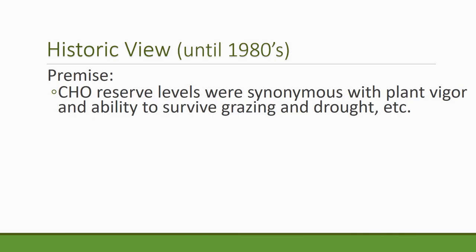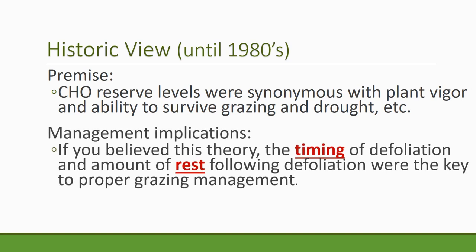The premise of this theory was that the carbohydrate reserve level — measured as starch in the roots — was synonymous with plant vigor and the ability of the plant to survive grazing and drought. It was important for managers to track this level of carbohydrates in the roots, which would tell us whether the plant was able to survive a disturbance. The management implications were that timing of defoliation was really important — we had to wait until the plant was putting energy back into those roots — and that rest time after defoliation was key to proper grazing management. This might be like a savings account theory: someone might look at the savings account to determine whether the plant could handle a disturbance.